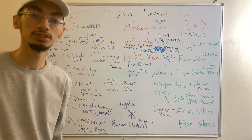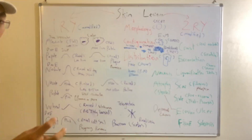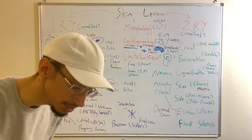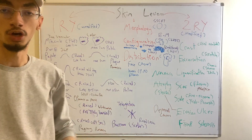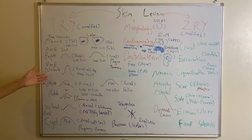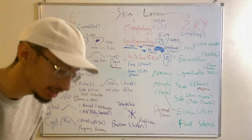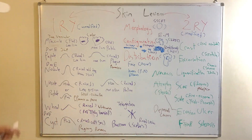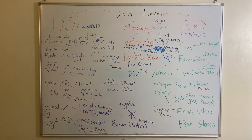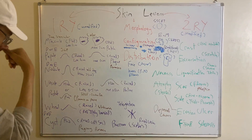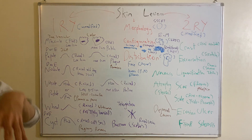If we have a raised lesion more than one centimeter that is solid and deep — meaning its depth is greater than its diameter — then it is called a nodule. A classic example is rheumatoid nodules. These are raised lesions that lie deep within the dermal layer and are solid throughout.